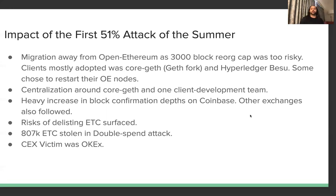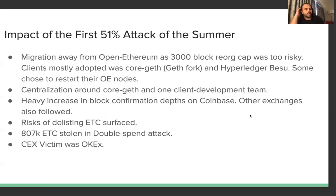The impact of the first attack included a major migration away from OpenEthereum, since its 3,000-block reorg cap was too risky. The ETC network mostly adopted Geth (Gorga) and Hyperledger Besu. There was a heavy increase in block confirmation depths on Coinbase and other exchanges, and a risk of delisting ETC surfaced — primarily from OKEx, which was also a victim of this attack. OKEx suffered 807,000 ETC stolen in the double spend, amounting to multi-millions of dollars.